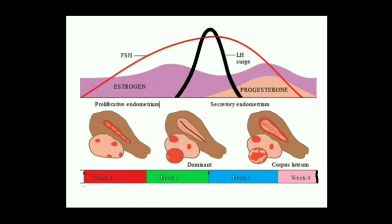The corpus luteum degenerates into the corpus albicans, which appears as a small scar on the ovary. Changes in the endometrium also occur shortly after menstruation. The endometrium consists of the basal layer and is inactive initially. As ovulation approaches, an echogenic halo develops on either side of the thin endometrium.